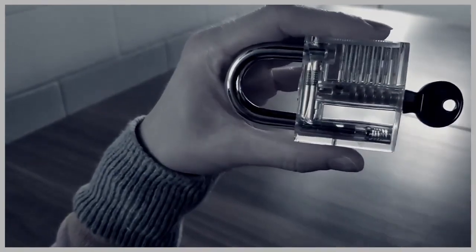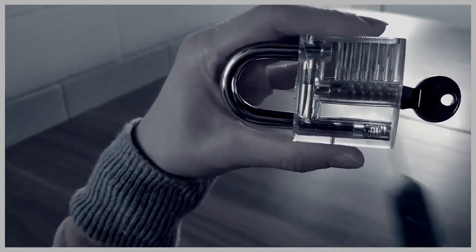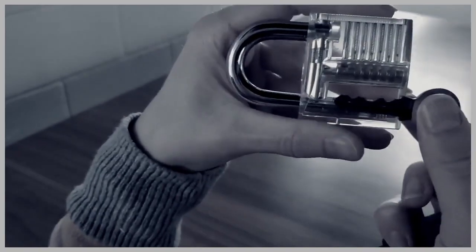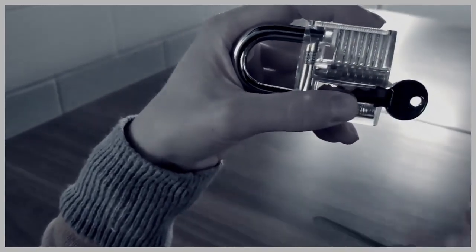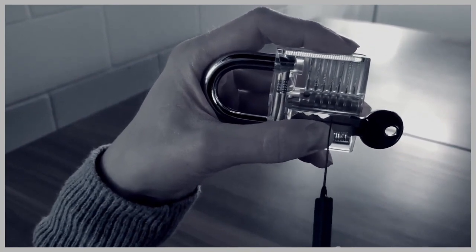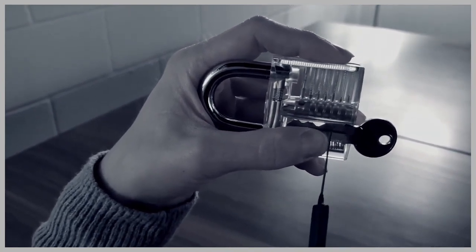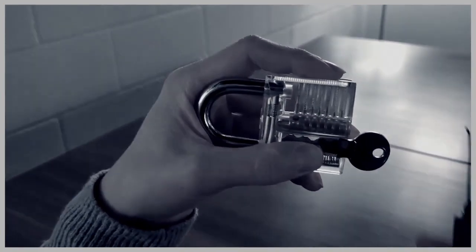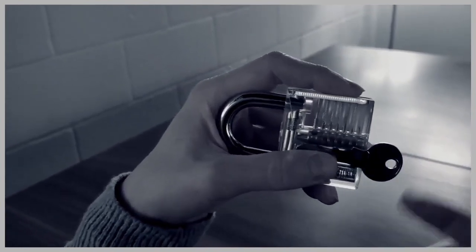So, the top parts of the pins are all the same size, and then the bottom parts are all different sizes. The pin that is on this part of the key is going to be much shorter than the pin that's on this part, so that when you insert the key, they all end up at the same height.